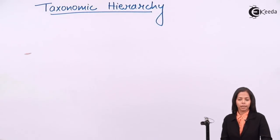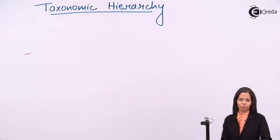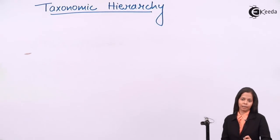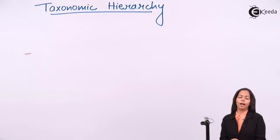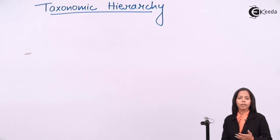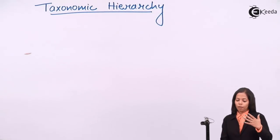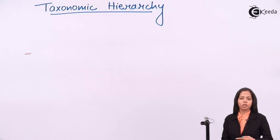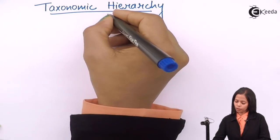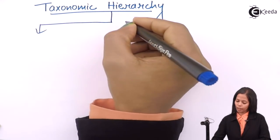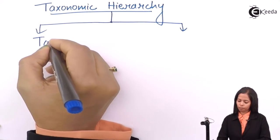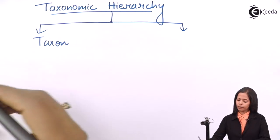In the previous video we studied the meaning of systematics and taxonomy. Now we are going to understand what is taxonomic hierarchy. Taxonomic hierarchy is a position given to the organism in biology. Before we understand the positions present in taxonomic hierarchy, we need to know two terms: taxon and category.